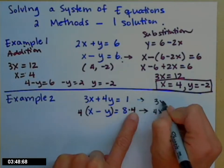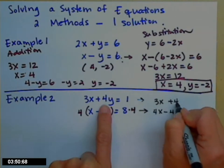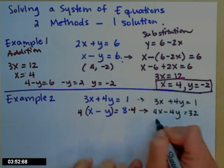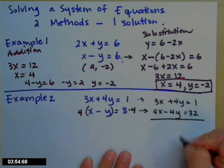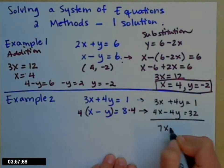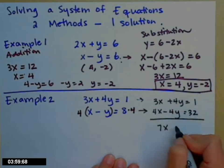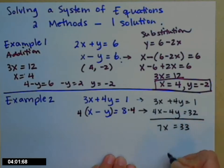We're just going to copy that top equation over. And now, look at my y terms. When I add those two together, those guys are going to go away. So 7x, 0y's equals 33. Divide by 7. x equals 33 sevenths.